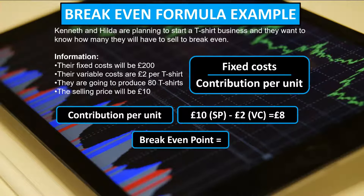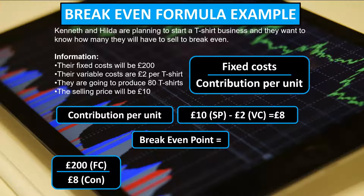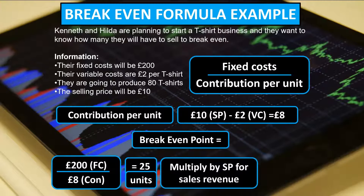Now we have this information we can calculate the breakeven point. The fixed costs of £200 are divided by the £8 contribution per unit which we have just calculated. This gives an answer of 25. When calculating breakeven using this formula, the answer always represents how many units it takes to breakeven. If you wanted to know how much sales revenue would be required to breakeven, you would simply multiply these units by the selling price per unit, which in this case is £10.